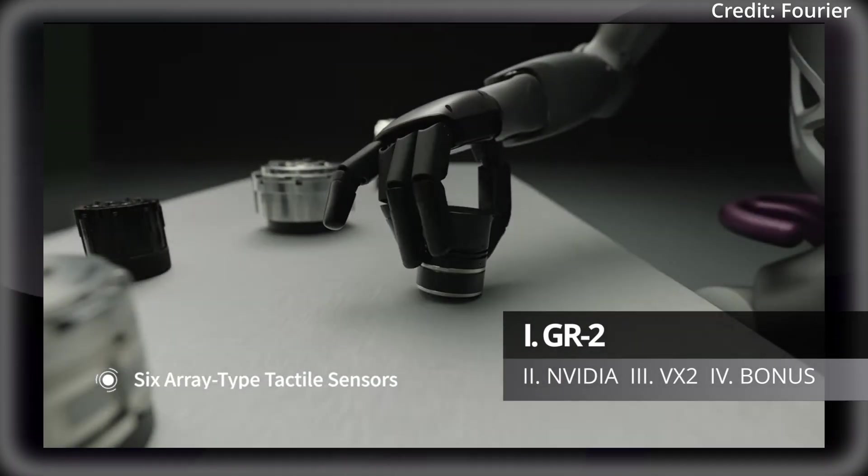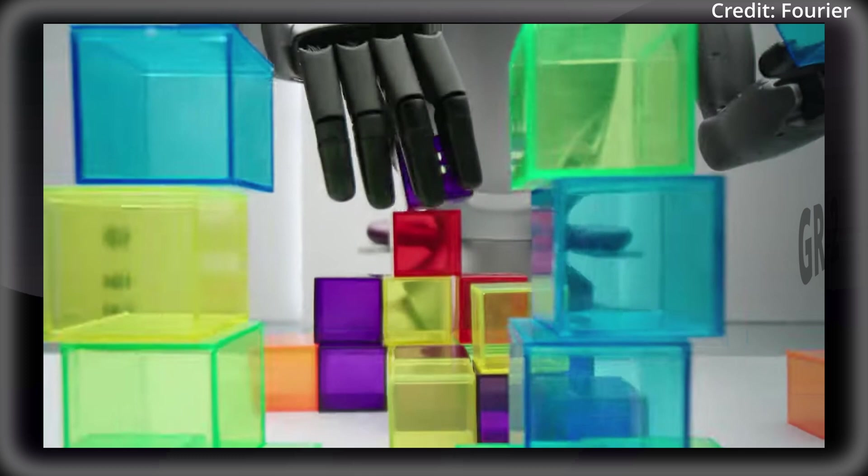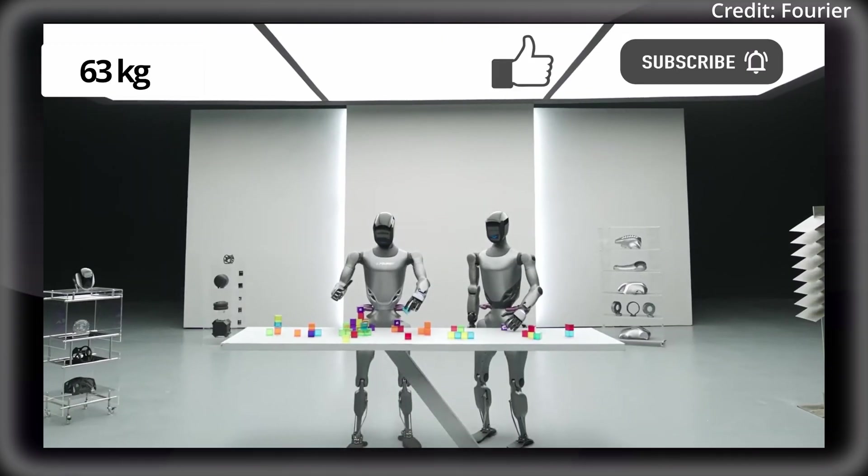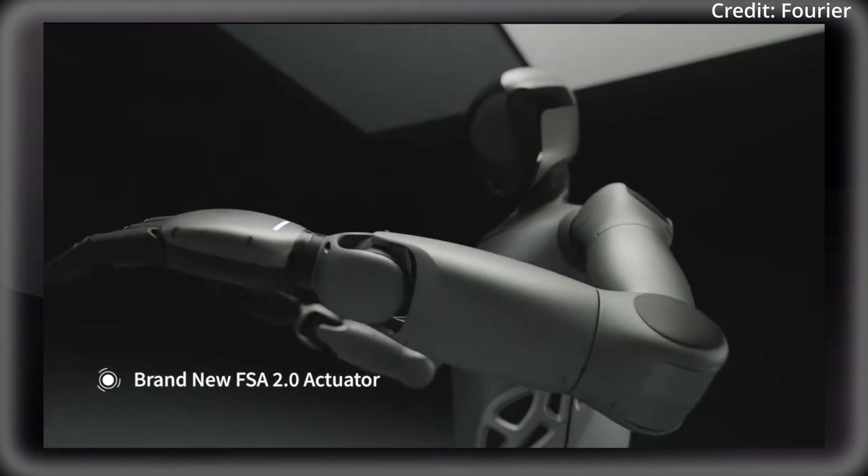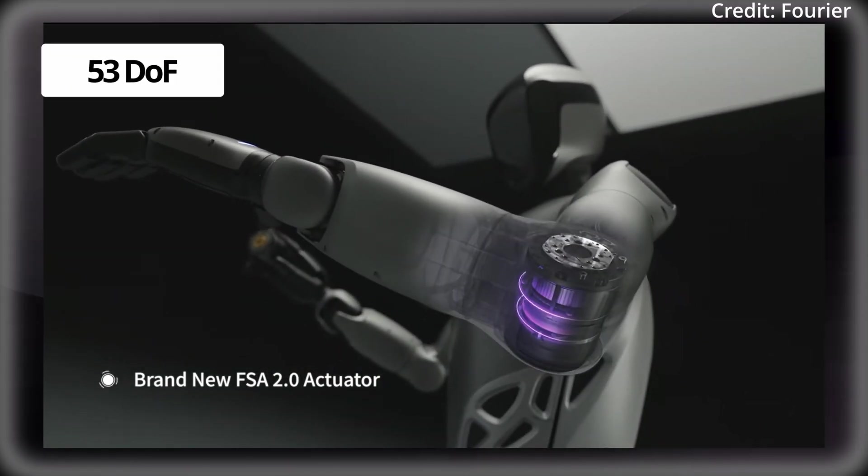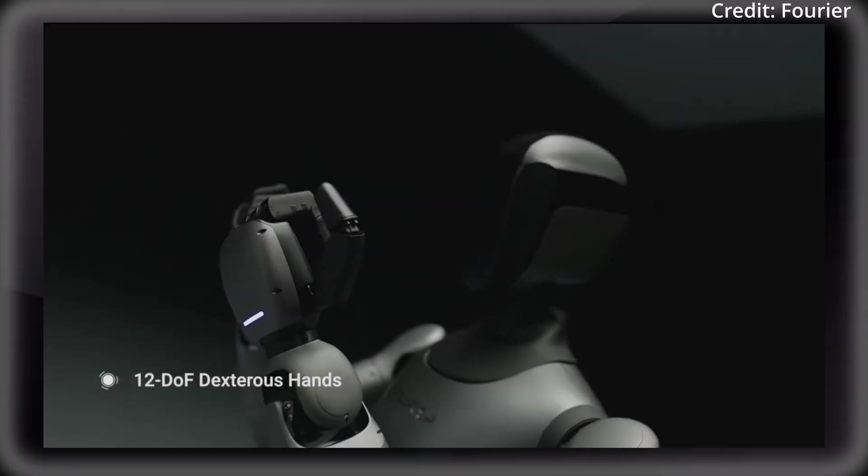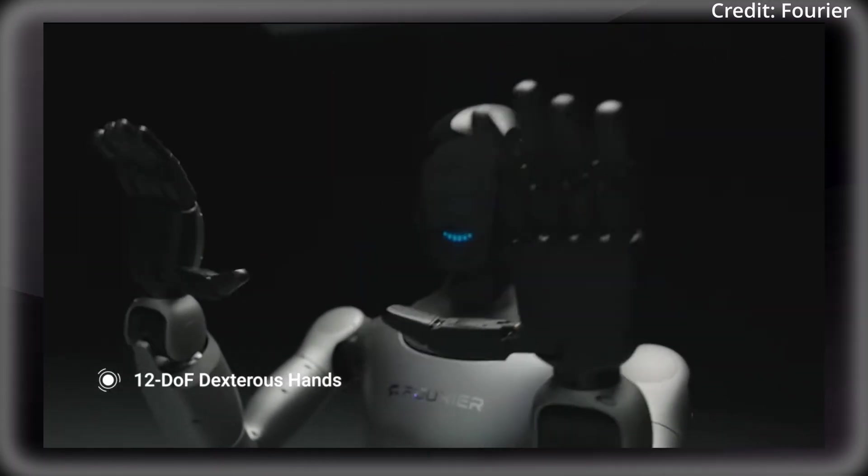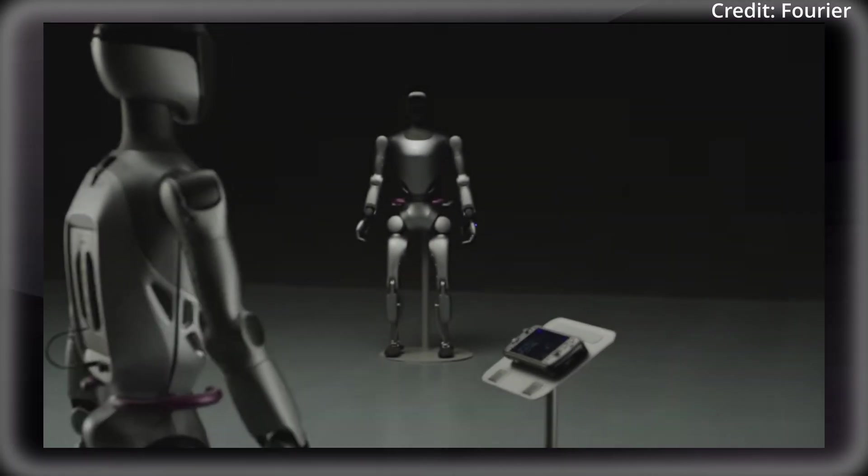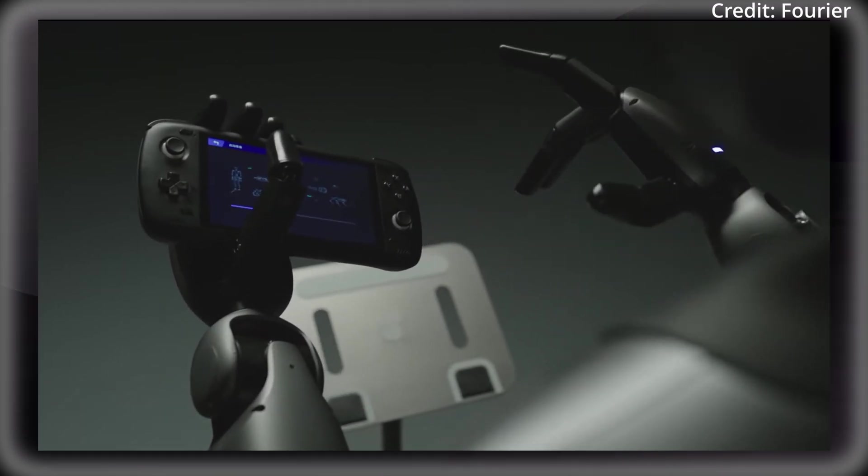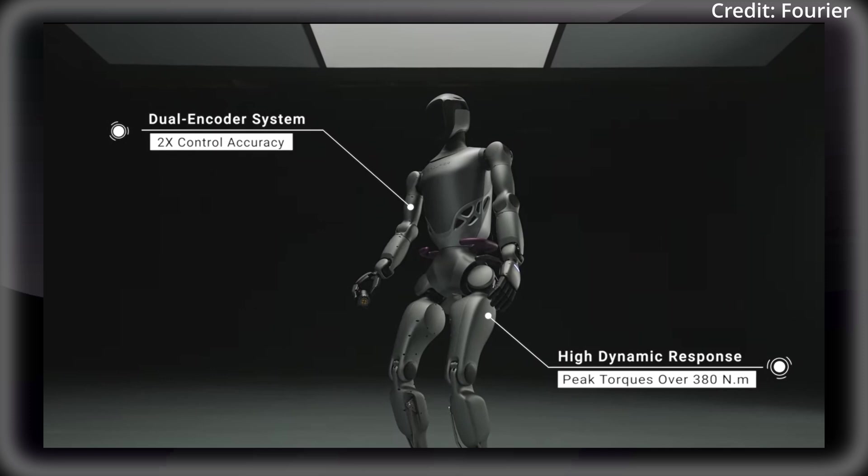the GR2 has redesigned its physical specifications, now standing at 175cm tall and weighing just 63kg, with this new design housing a total of 53 degrees of freedom for fluid and human-like movements. As for strength, the robot's capabilities are further enhanced by its single-arm load capacity of 3kg, opening up a wide range of potential applications in various scenarios at home or at work.